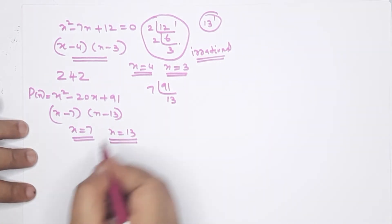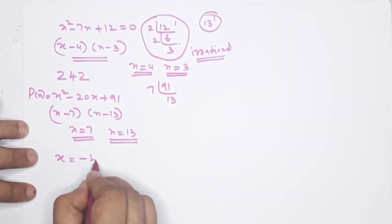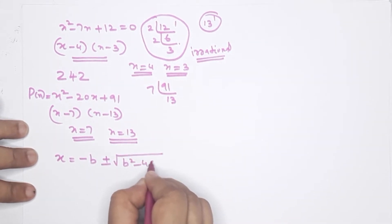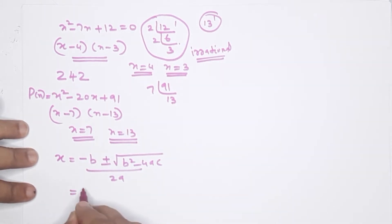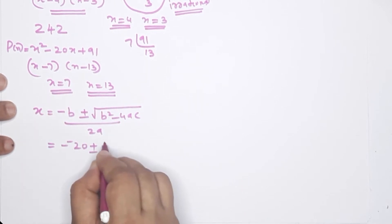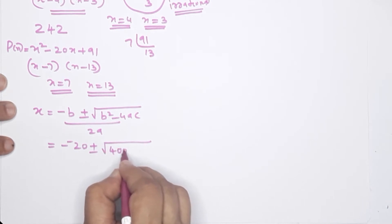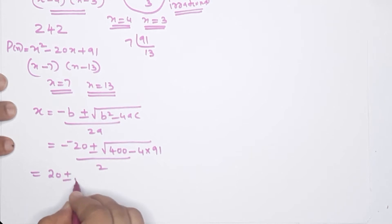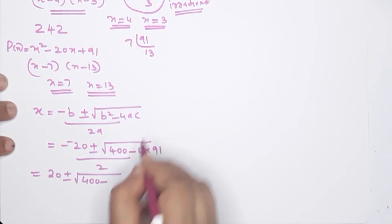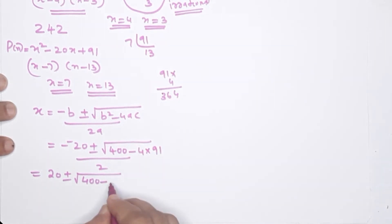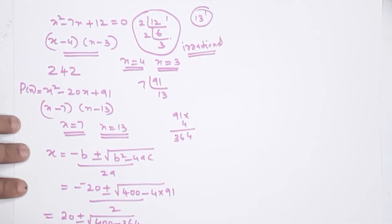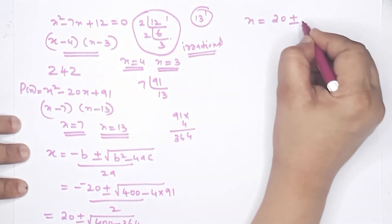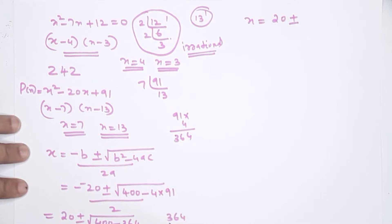Let's also verify using the quadratic formula. We compute 400 minus 91 times 4, which gives 400 minus 364 equals 36. Then x = (20 ± √36) / 2. Since √36 = 6, we have x = (20 ± 6) / 2.